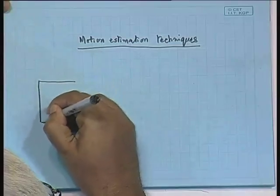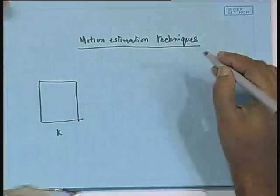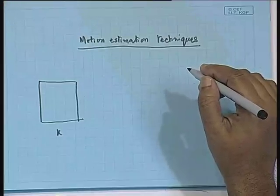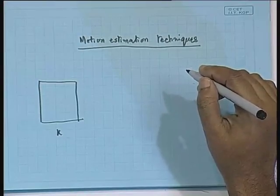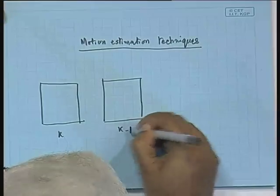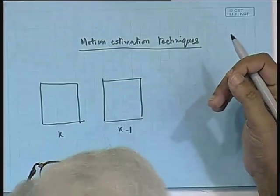What we discussed last time is that if we have to encode a frame and we would like to exploit the temporal redundancy in order to achieve significant compression, we take our candidate frame to be frame number k. That candidate frame k could be encoded using one of the past frames — say the immediate past frame, designated as k minus 1.